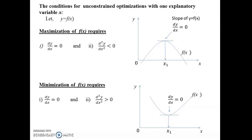On the other hand, minimization of y = f(x) requires two conditions. The necessary condition is dy/dx = 0, and the sufficient condition is d²y/dx² > 0. The first order condition gives us the minimum value of x at the minimum point on the curve, and the second order condition d²y/dx² > 0 ensures that the function slopes upward after attaining the minimum point.